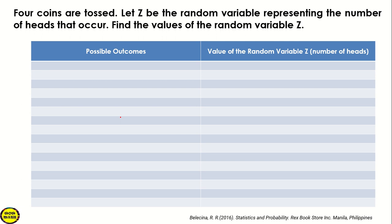Since we have 4 coins, what are the possible outcomes? So first, we could have 4 tails. And then, we could have head-tail-tail-tail, or tail-head-tail-tail, tail-tail-head-tail, and tail-tail-tail-head. So those are the outcomes with 3 tails.